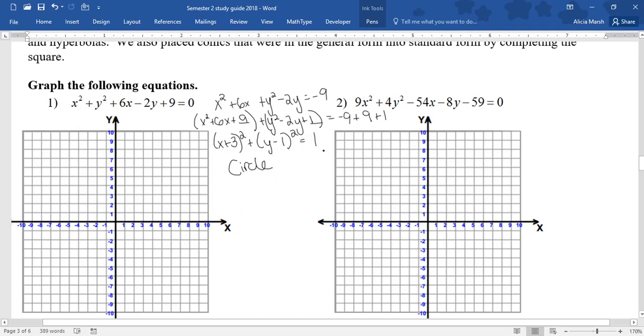So this is a circle because there's no fractions, and it's equal to 1, or it's equal to a number. Notice, if this would have been like an ellipse, since it has a plus in the middle, we would have fractions. So this one, I know my center is at negative 3, positive 1, because it's opposite of that. Make a little note of that. Center is negative 3, 1.